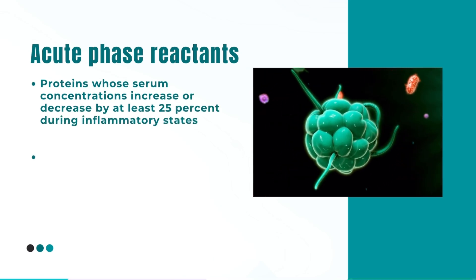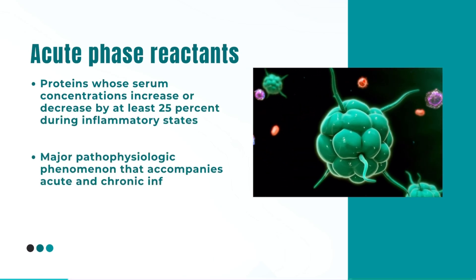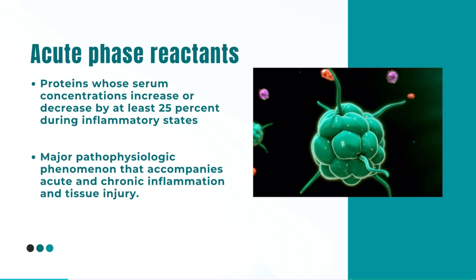First, let's understand what acute phase reactants are. These are proteins whose serum concentrations increase or decrease by at least 25% during inflammatory states. This is a major pathophysiologic phenomenon that accompanies acute and chronic inflammation as well as tissue injury. Acute phase reactants can have pro-inflammatory or anti-inflammatory effects during the acute phase response.